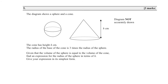Question five is different — no numbers are given; we work purely with algebra. The cone has a height h. The radius of the base of the cone is three times the radius of the sphere. Since no radius is given for the sphere, let's call it x. Then the radius of the cone is 3x.